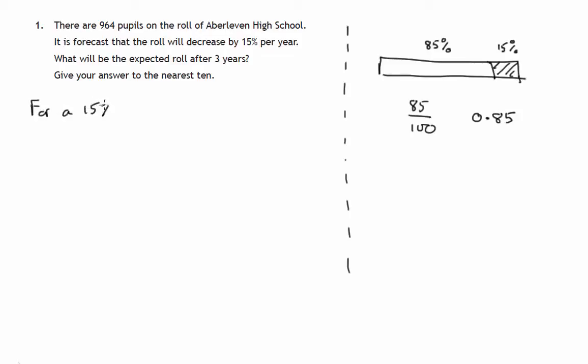So for a 15% decrease, the multiplier is 0.85.